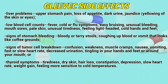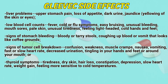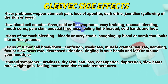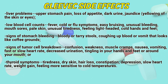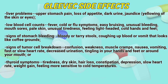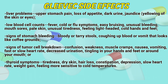Signs of stomach bleeding: blood in stools, coughing up blood, or vomit that looks like coffee grounds. Signs of tumor lysis syndrome: confusion, weakness, muscle cramps, nausea, vomiting, fast or slow heart rate, decreased urination, tingling in your hands and feet or around your mouth.